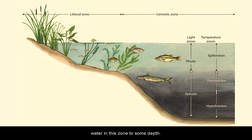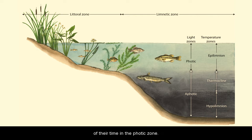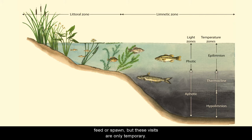Despite not reaching bottom, sunlight still shines into the water in this zone to some depth. The part of the limnetic zone that gets sunlight is called the photic zone. Some species of large open-water fish spend much of their time in this photic zone. They may swim into the littoral zone now and then to feed or spawn, but these visits are only temporary.